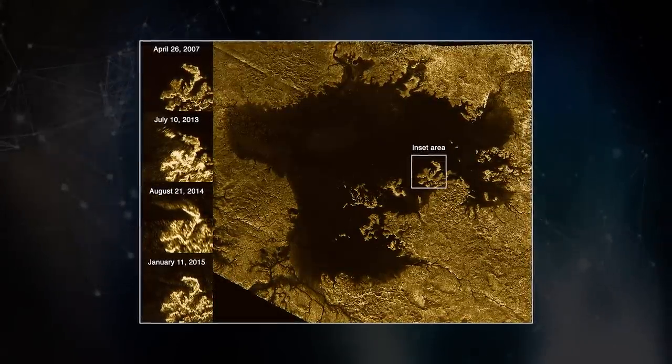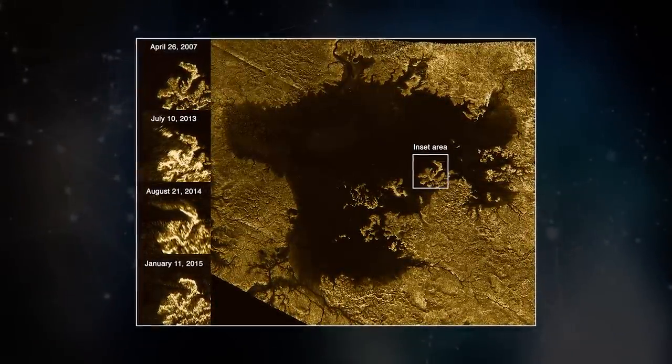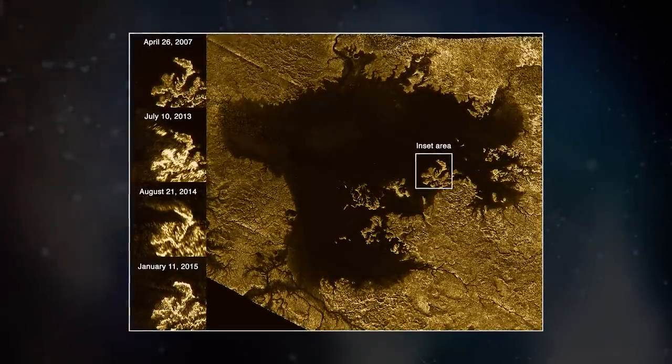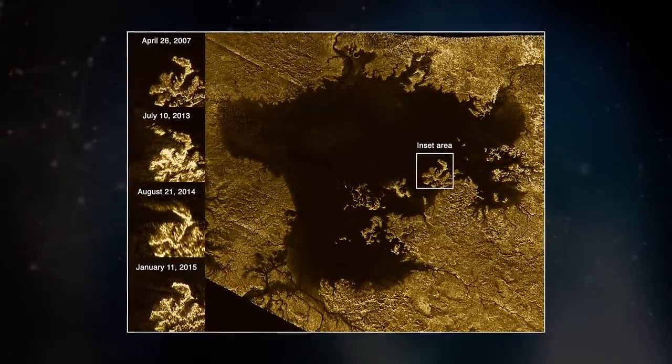We're not sure, but scientists speculate that nitrogen bubbles formed in Titan's oceans sit on the surface for a period of time, creating a temporary island that eventually dissipates.